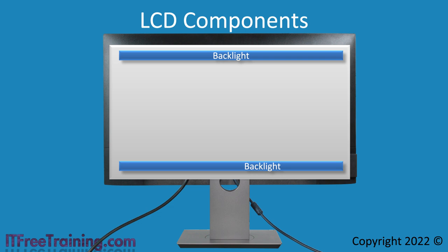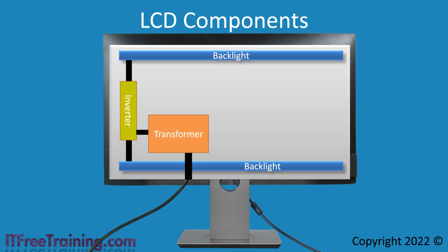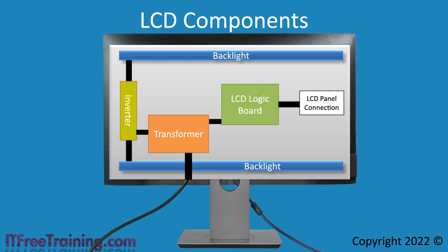Usually you would need to dismount the middle casing around the screen to get to the backlights. In older LCD screens, these backlights were powered by an inverter, which provides alternating power to the backlight making it flicker at a high rate. The inverter is powered by a transformer connected directly to the power cable. In order to control what is displayed on the screen, there is an LCD logic board. This logic board takes instructions from the computer and transfers them to the LCD panel via a ribbon cable. The LCD logic board may also be connected to an analog-to-digital converter where connections from the computer are plugged in.